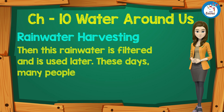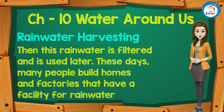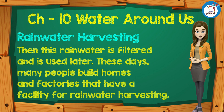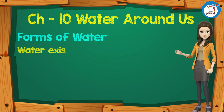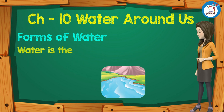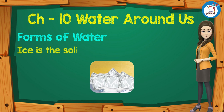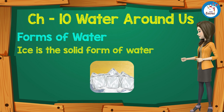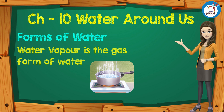These days, many people build homes and factories that have a facility for rainwater harvesting. Forms of Water: Water exists in three forms — liquid, solid, and gas. Water is the liquid form, ice is the solid form, and water vapor is the gaseous form of water.